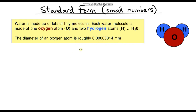We could have things even smaller than this. If we went deeper and looked at the size of electrons and other subatomic particles, they're going to be even smaller. So instead of writing out all of these zeros, we need another way of expressing this — and we can use standard form to do that.